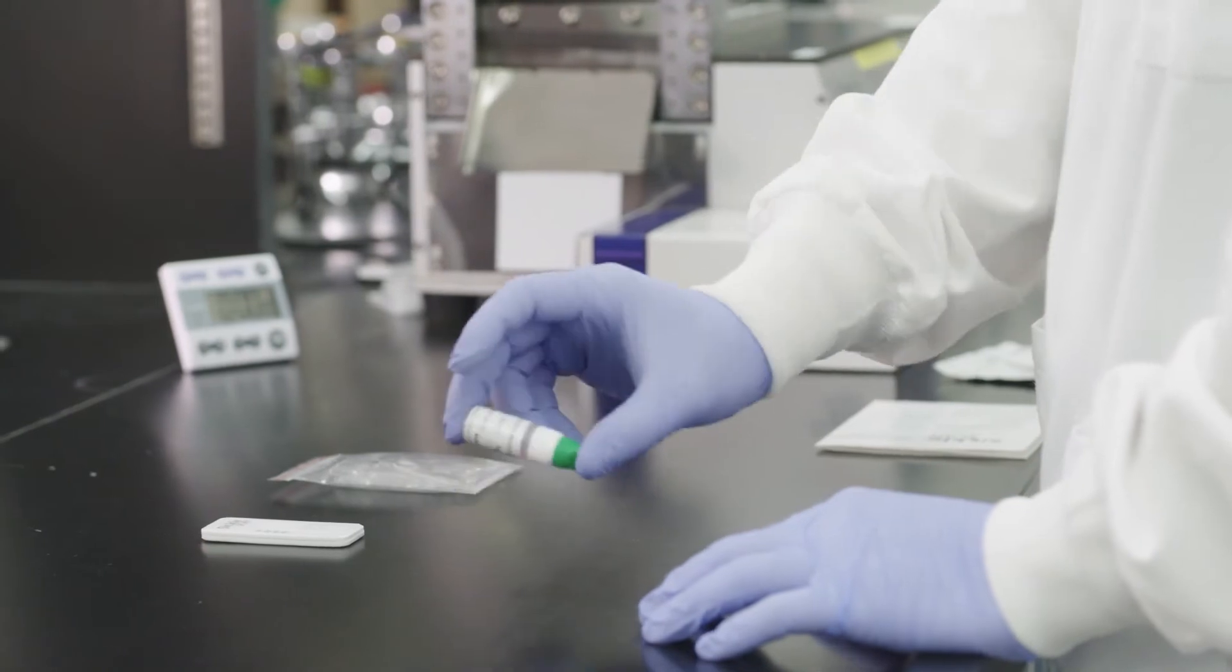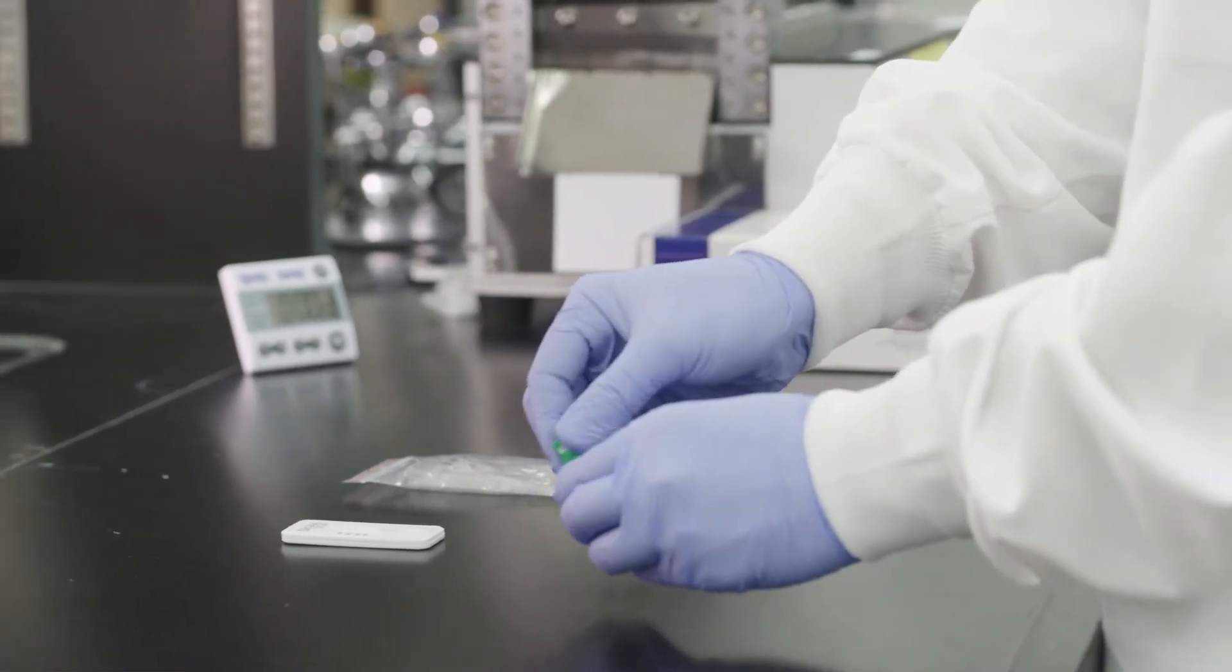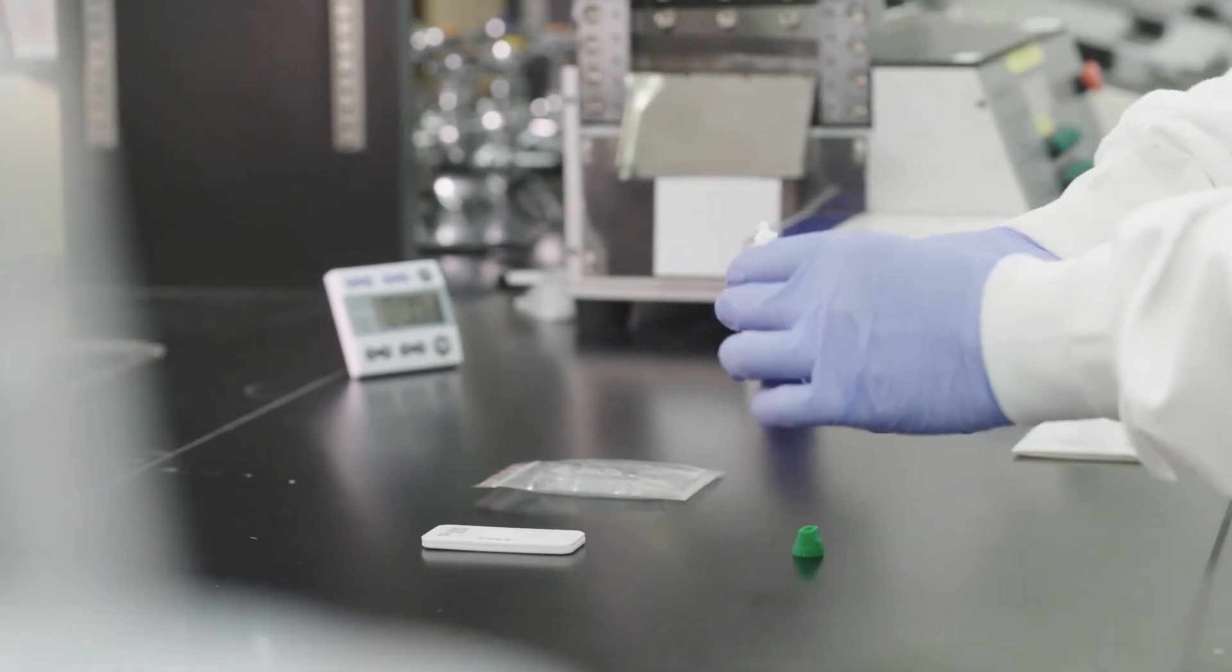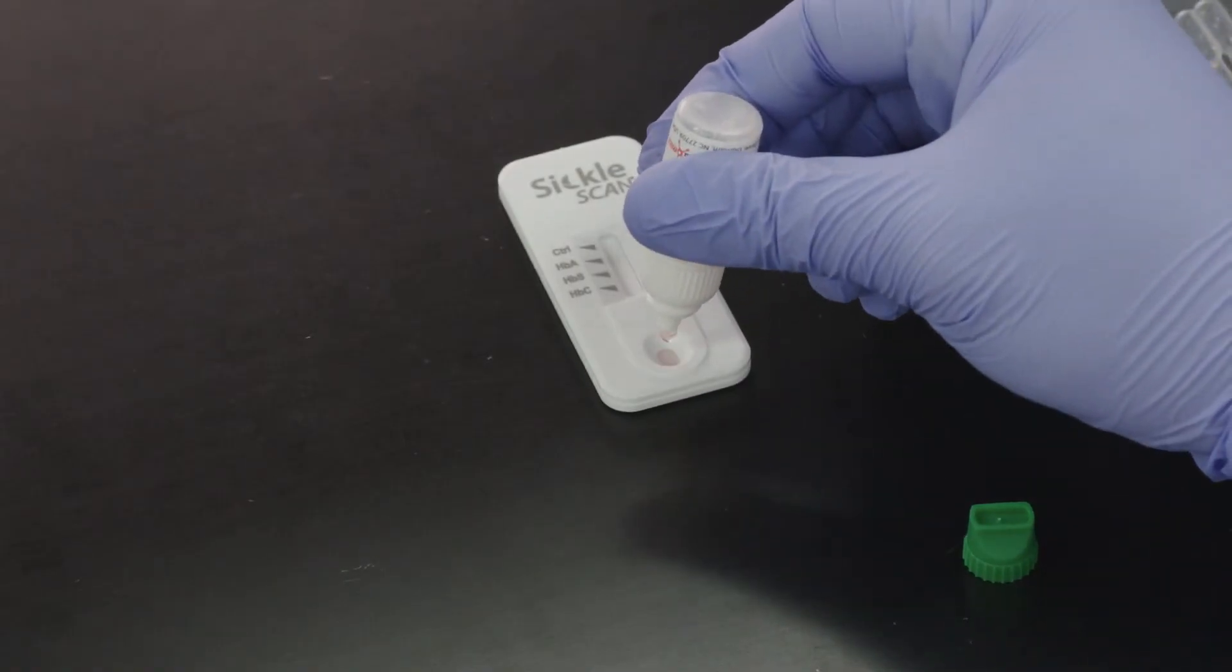Invert the module three times to thoroughly mix the test. Next, remove the green part of the two-piece cap and dispense five drops of the solution directly onto the SickleScan device.